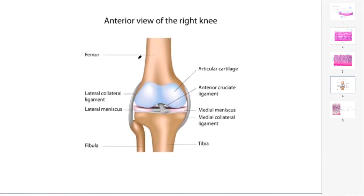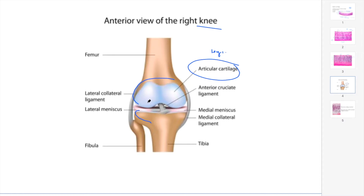Now, where can you find this type of cartilage? The main area is near the ends of bones at joints — at articular surfaces where two bones communicate, like in the knee joint. The articular cartilage covering those surfaces is a specific type of hyaline cartilage.